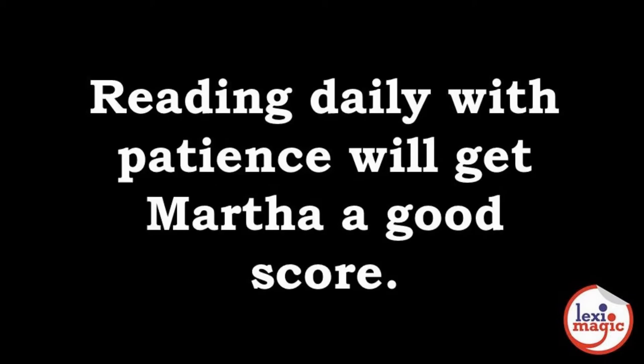A noun is a word used to represent a person, thing, or idea. Example: 'Reading daily with patience will get Martha a good score.' In this example, Martha is a proper noun, patience is an abstract noun, reading is a gerund — a verb form used as a noun — and score is an uncountable noun.